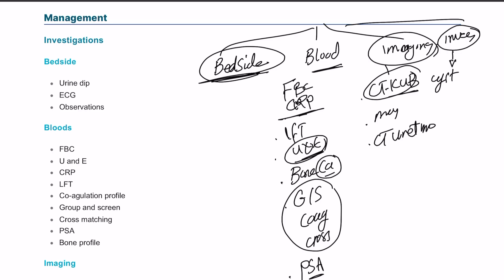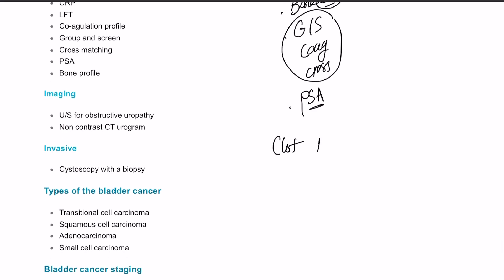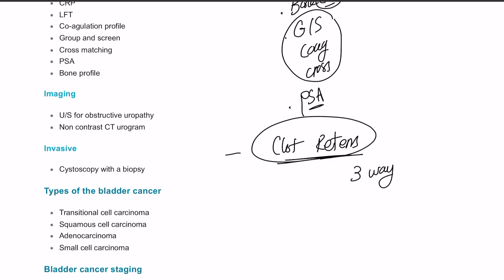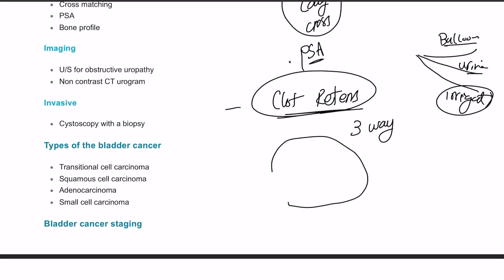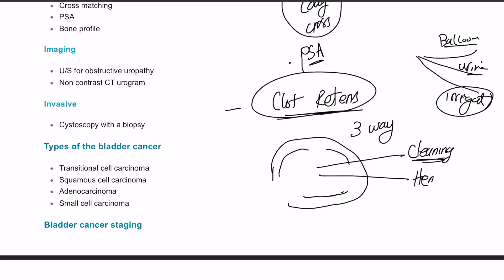In terms of treatment, if we have clot retention, the main urgent treatment is a three-way catheter. It has three channels: one to inflate the balloon to fix it, one to drain the urine, and one for irrigation. Continuous irrigation with normal saline fills the bladder constantly, serving two roles: cleaning by removing blood clots and blood from inside, and acting as a hemostatic agent to any source of bleeding. Definitive treatment will be based on cystoscopy and biopsy.